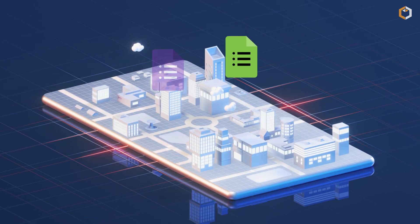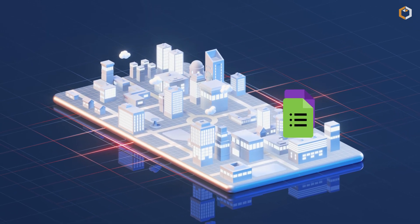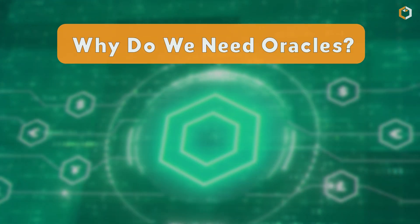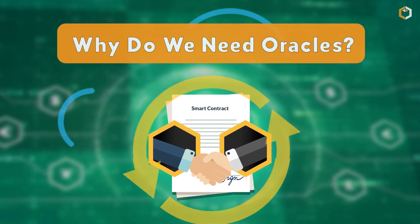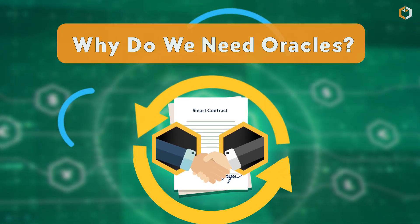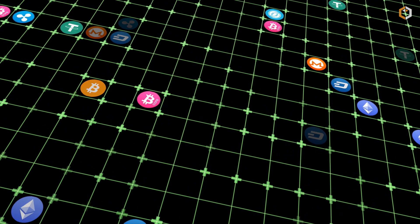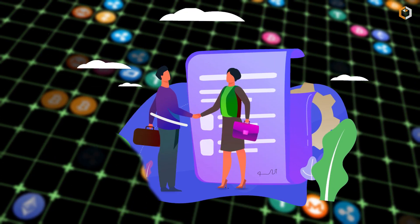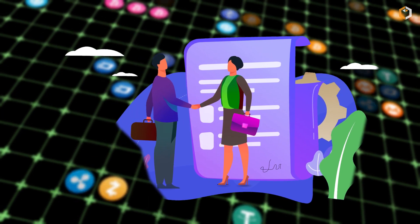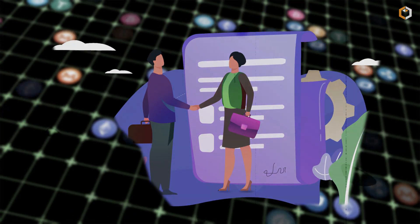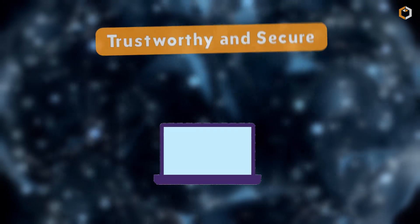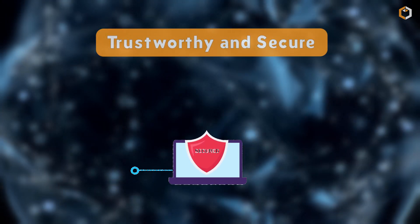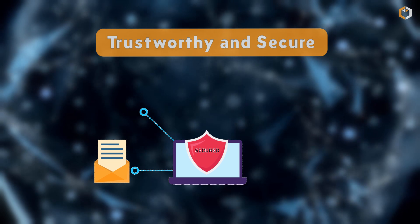But why are blockchain oracles so important? It's because they allow smart contracts to be flexible and adaptable to changing circumstances, which is crucial in today's world. Without them, smart contracts would get old quickly and would be limited to the information that was available at the time of their creation. However, it's important to make sure that the delivered information is accurate and reliable.